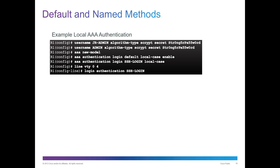What does that mean? Login default is the default method list. Local-case is method one — that's the case-sensitive local database. Enable is another method. We could also do an SSH login with a named list and local-case as the method. So you can have multiple authentication models — a default list and a named list.